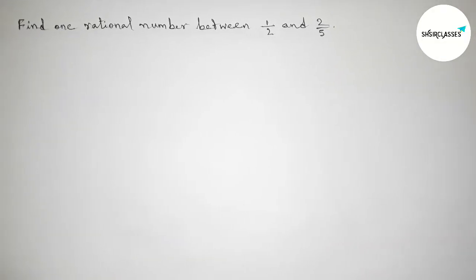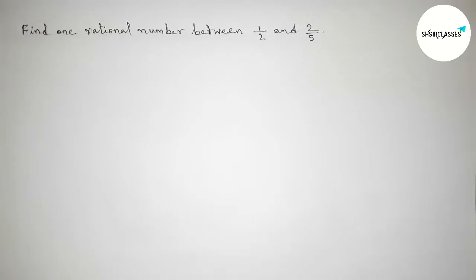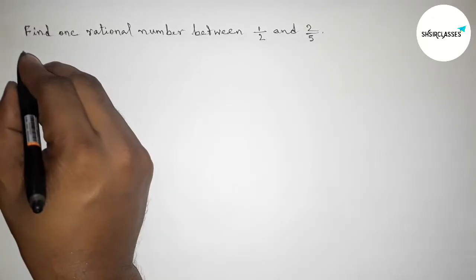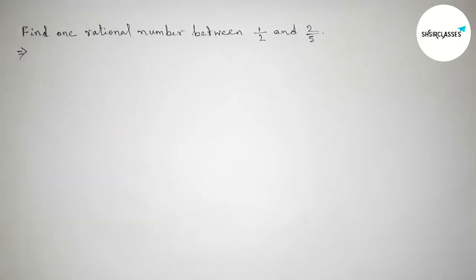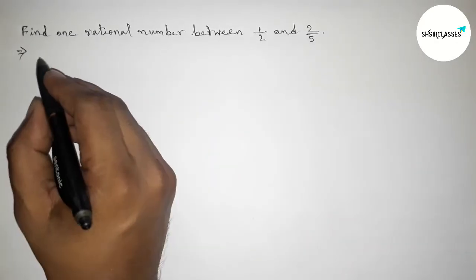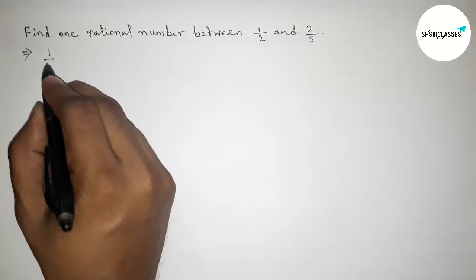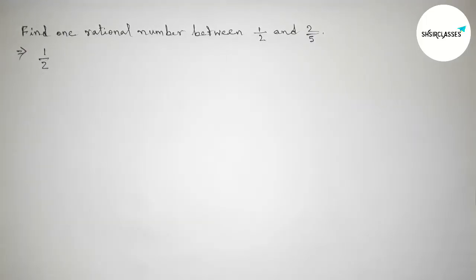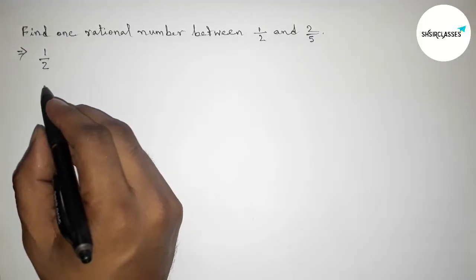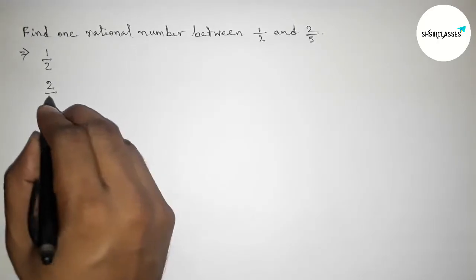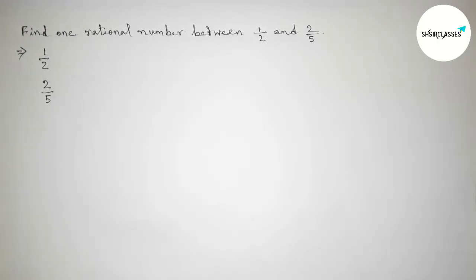First of all, let us solve this problem. Here, the first rational number is 1 by 2, and the second one is 2 by 5.